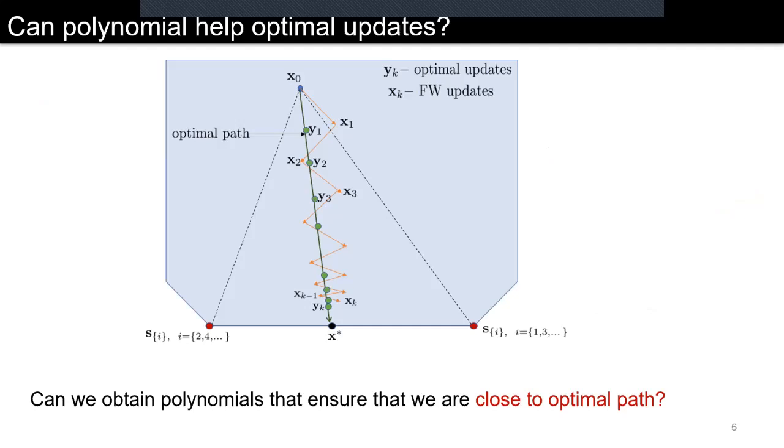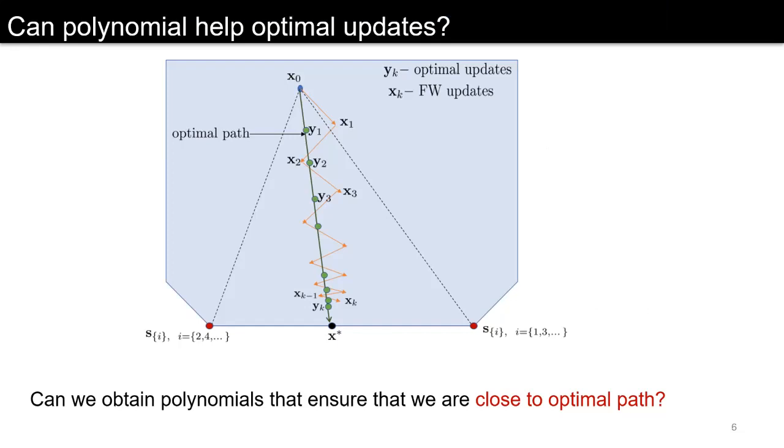This is shown here where the red lines represent the Frank-Wolfe updates. The aim of our work is to find the updates as y1, y2, y3 so that it is close to the optimal path. Here the optimal path is the line or path connecting the initial point to the optimal point.